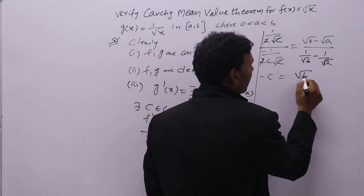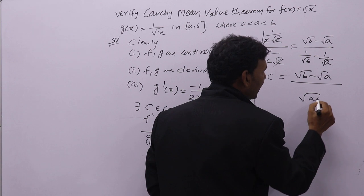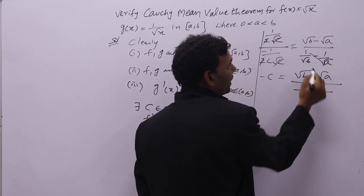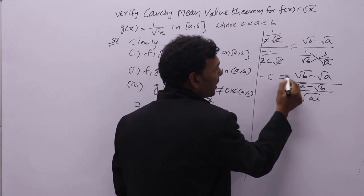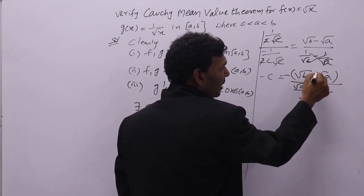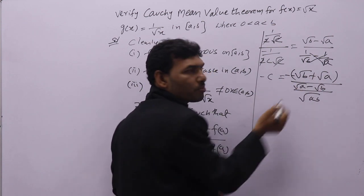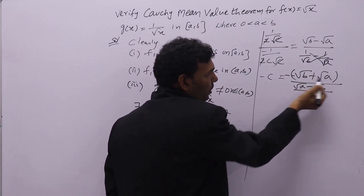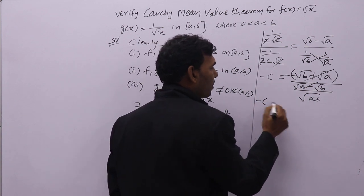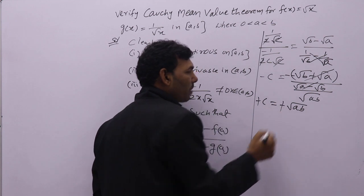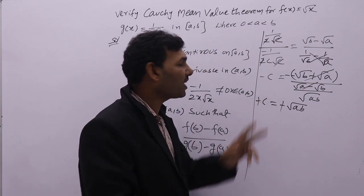We get c equal to root b minus root a divided by 1 by root b minus 1 by root a. Taking root a and root b as common in the denominator gives root a minus root b. Taking minus common makes it minus(root b minus root a), which cancels with the numerator. We get minus c equal to minus root(ab), so c equals root(ab).